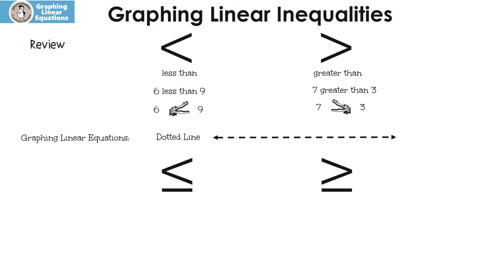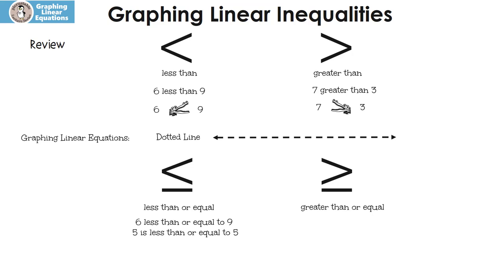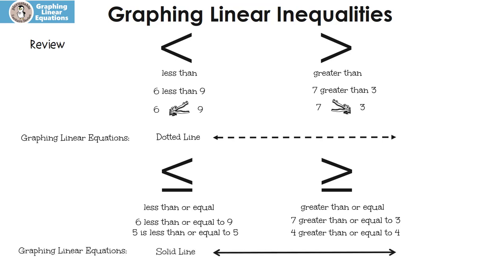Let's look at the next two symbols. We have less than or equal and greater than or equal. An example of less than or equal would be 6 is less than or equal to 9. We could also say that 5 is less than or equal to 5 — both true statements. I could say 7 is greater than or equal to 3, or 4 is greater than or equal to 4. When we graph linear inequalities with these symbols, we're going to use a solid line.